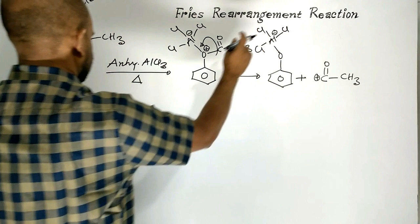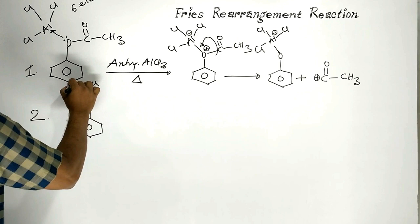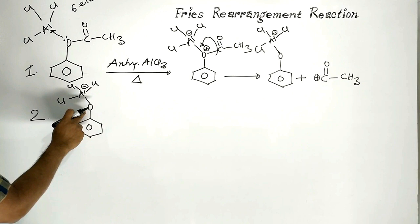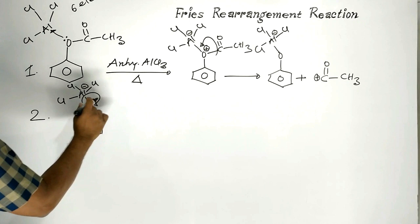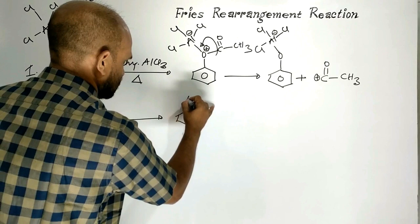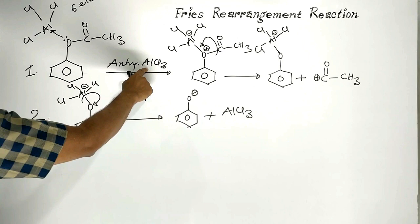Step 2: Because of the negative charge over aluminium, oxygen is a highly electronegative atom, so the oxygen-aluminium bond undergoes heterolytic fission. As a consequence, phenoxide ion is formed in presence of Lewis acid, anhydrous aluminium chloride.